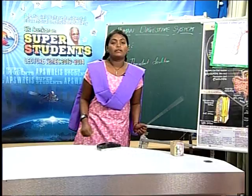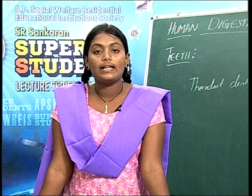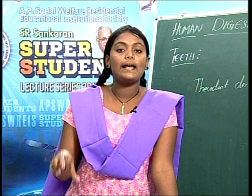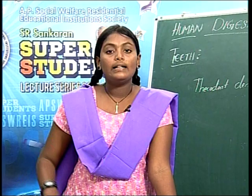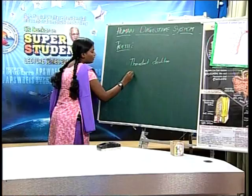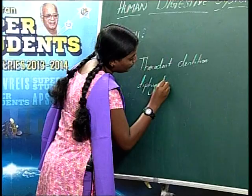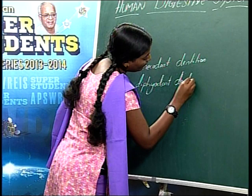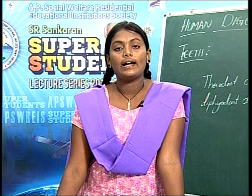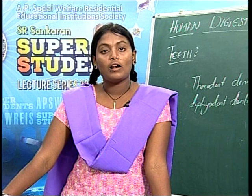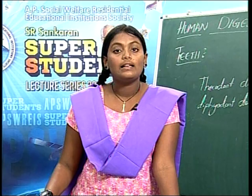In their life span, human beings have two sets of teeth. One is milk dentition, and it is replaced by the permanent dentition. Having two sets of teeth in the life span is known as diphyodont dentition. Adult human beings have four different types of teeth: incisors, canines, premolars and molars. Having these four different types of teeth is known as heterodont dentition.